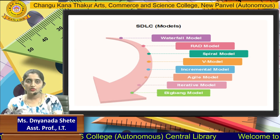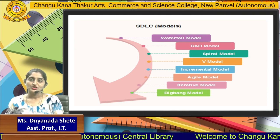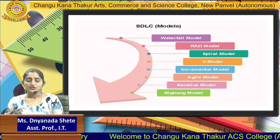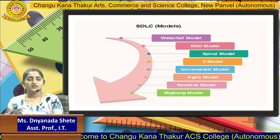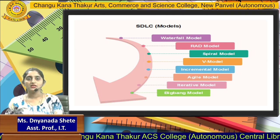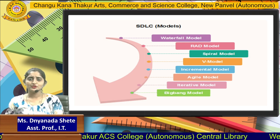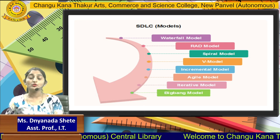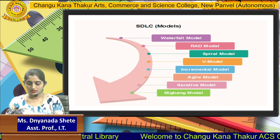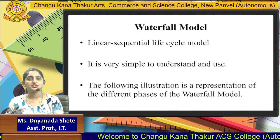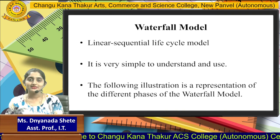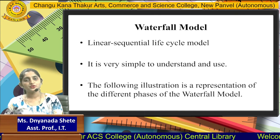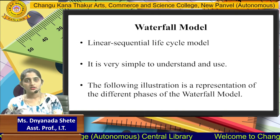There are eight models present in your SDLC life cycle, and these models are useful for developing your project. All these models have different purposes, but the main aim is developing your actual project. First we will discuss what is meant by the waterfall model. The waterfall model is a linear sequential model — it is very simple to understand and use.